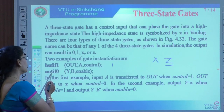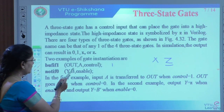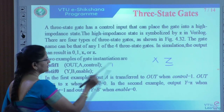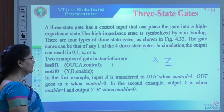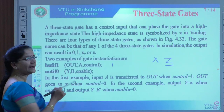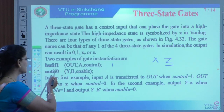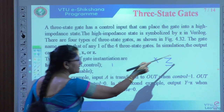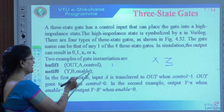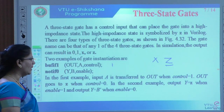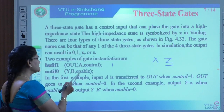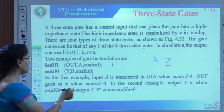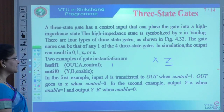Another one is notif0. Here, whenever output Y is Z (impedance), the enable line will be 1 — because it is taken with the 0 condition. If Y is Z (impedance), then the enable line will be 1. If the enable line is 0, then Y is equal to B-complement. That is what it executes with the given instruction.